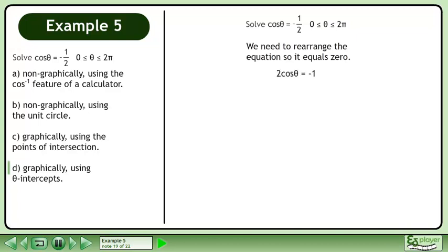Multiply both sides of the equation by 2. Bring all terms to the left side so the equation equals 0. Draw the graph and place dots at the theta intercepts.